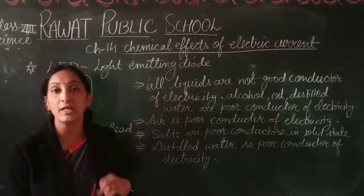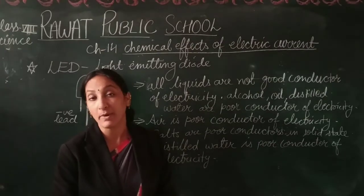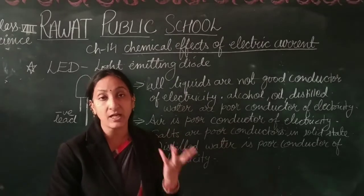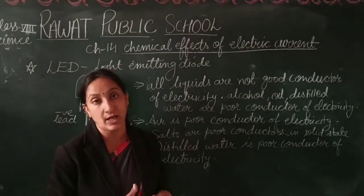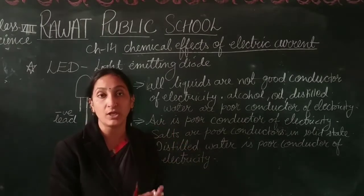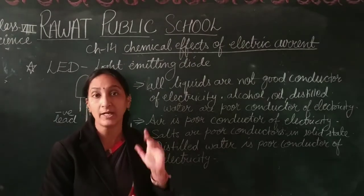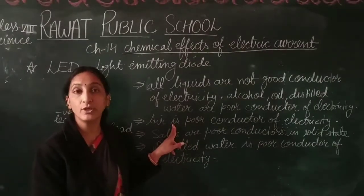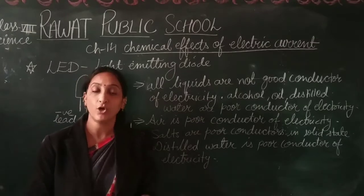Air is also a poor conductor — electricity cannot normally pass through it. But when there is a thunderstorm, high pressure and high temperature are created during lightning, and at that time air acts as a good conductor of electricity, which is why we see lightning.